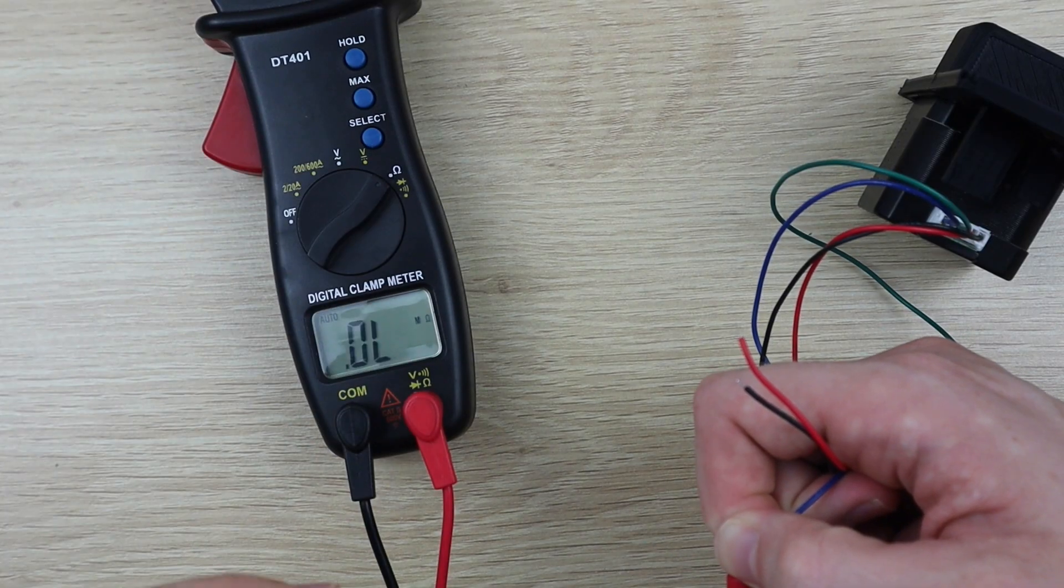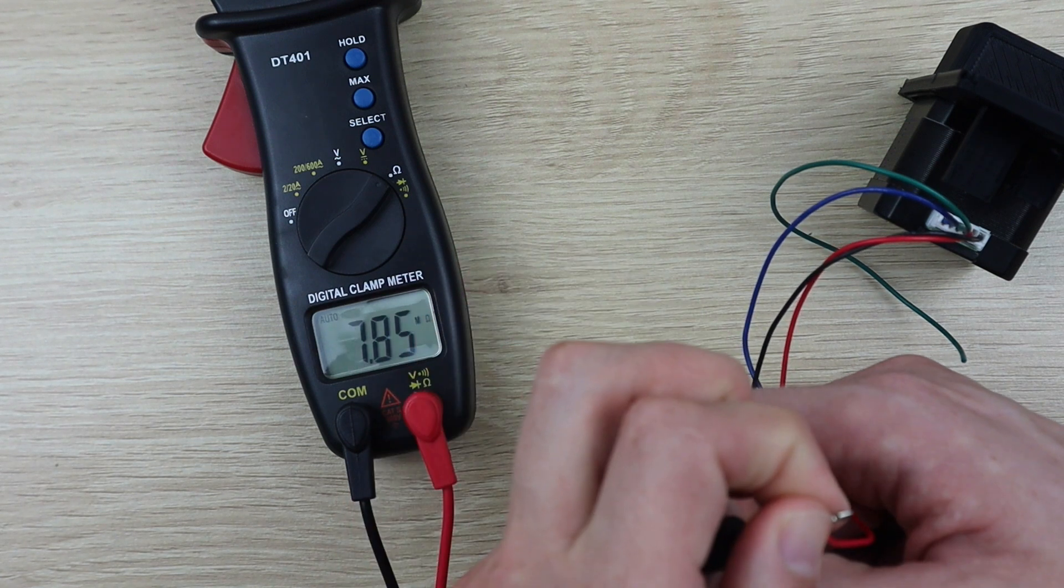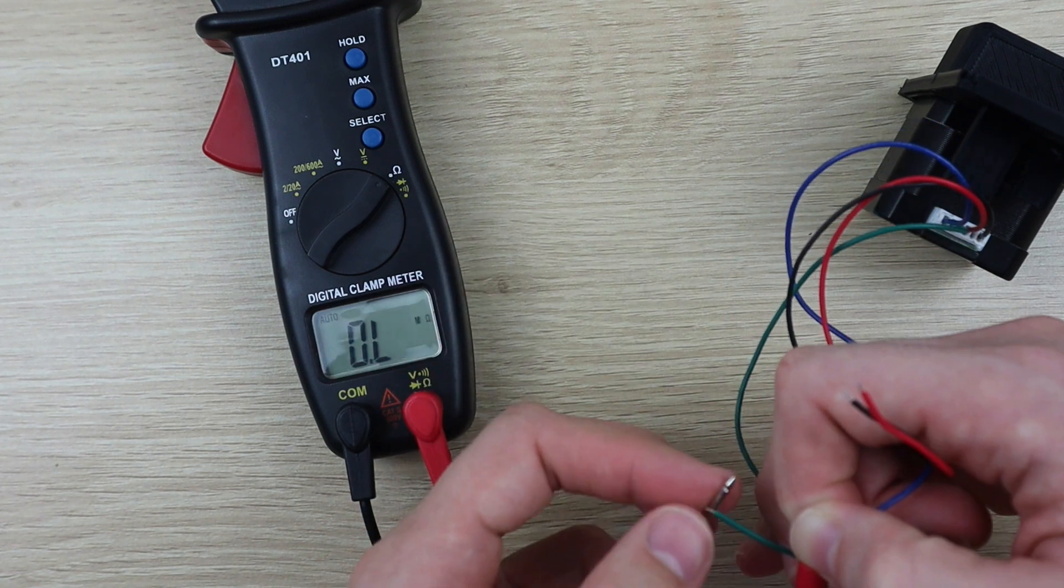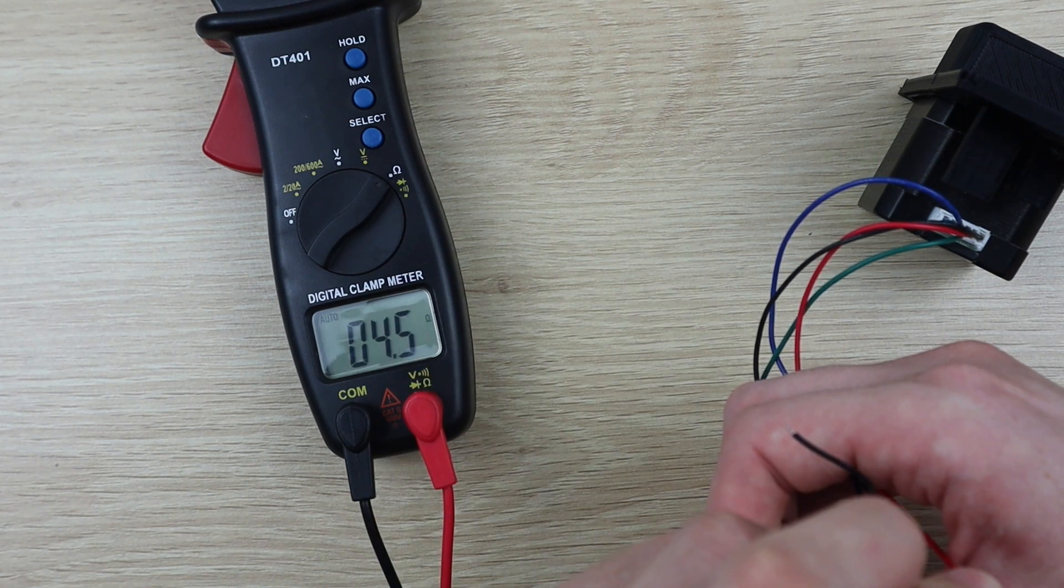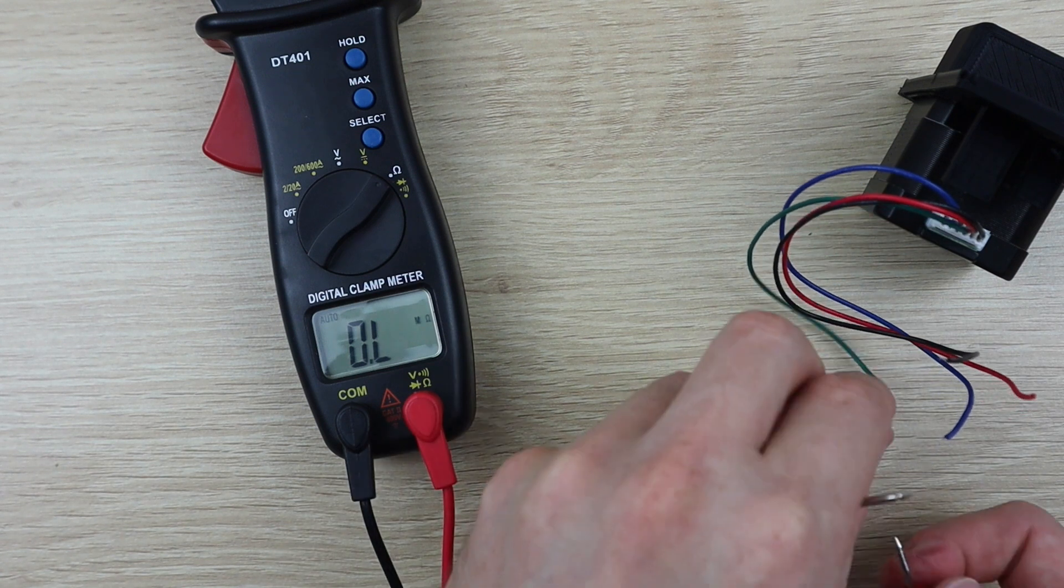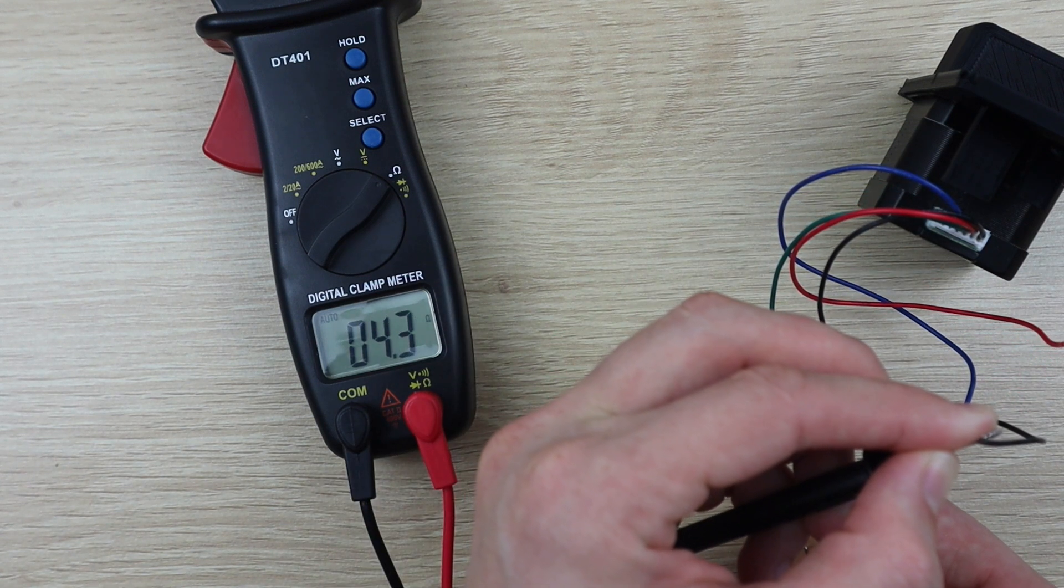In order to connect the stepper motor to the driver, you'll need to figure out which of the stepper motor leads belong to each of the two coils. If you're not using the same motor as I've used, use a multimeter to measure the resistance across each wire pair. The pairs associated with each coil should read about 4 to 5 ohms, while you should get a mega ohm reading for the other combinations.